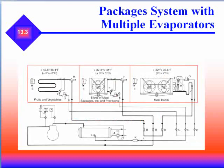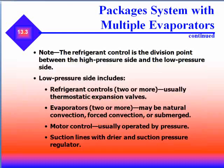This is an example of a piping diagram for a packaged system with multiple evaporators. Again, with multiple evaporators, the refrigerant control is the division point between the high pressure and low pressure side. The low pressure side includes refrigerant controls with two or more thermostatic expansion valves, and evaporators may be two or more — either natural convection, forced convection, or submerged.